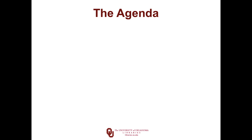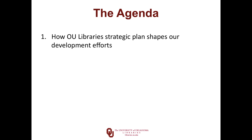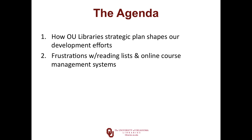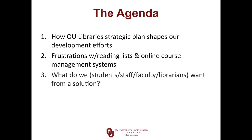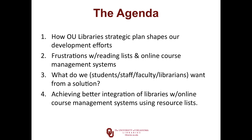What I really want to talk about on my part of the presentation is give you a little bit of context — how OU Library's strategic plan shapes what we do in software. Then I want to talk about our frustrations with online course environments and with reading lists. And then talk about what students, faculty, and librarians really want from these, and how you can take those things we heard and try to achieve better integration.